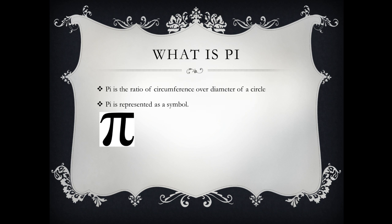So we start off with the definition of Pi. Pi is the ratio of circumference over the diameter of itself. So imagine if you have a circle and then you have a diameter. The ratio of the circumference to the diameter is Pi and Pi is represented as a symbol.